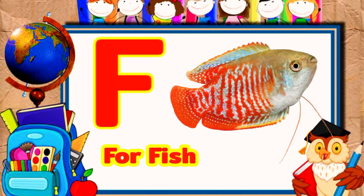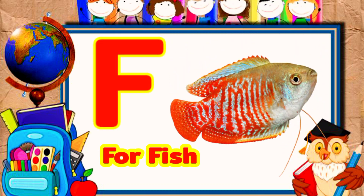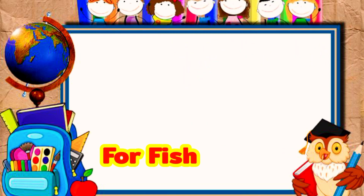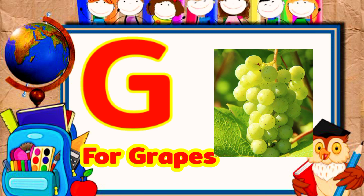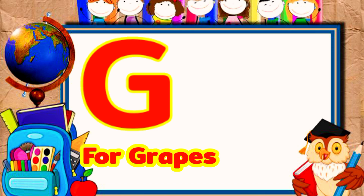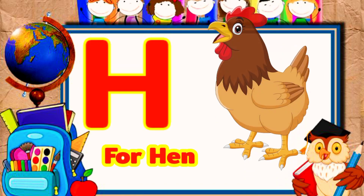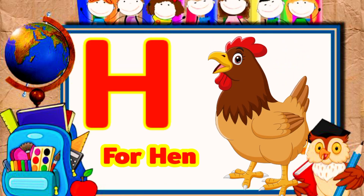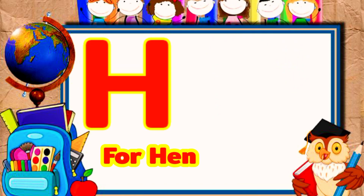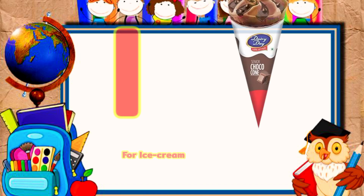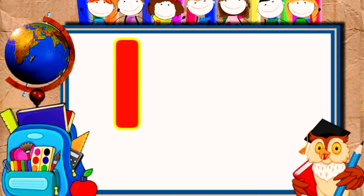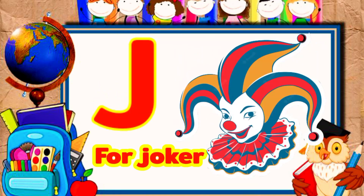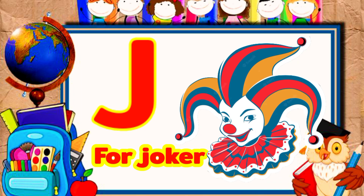F for fish, G for grass, F for head, I for ice cream, J for joker.